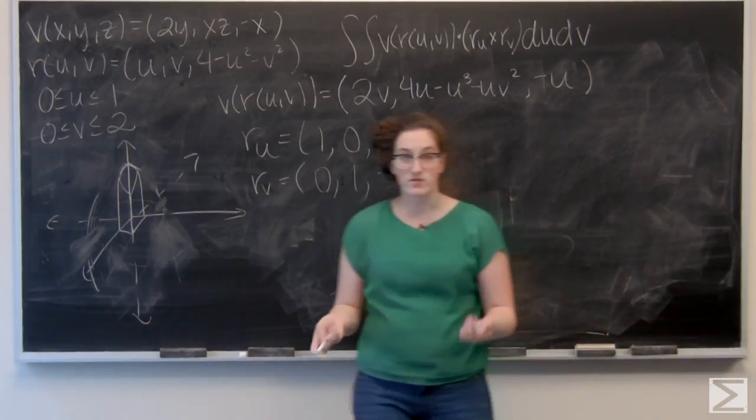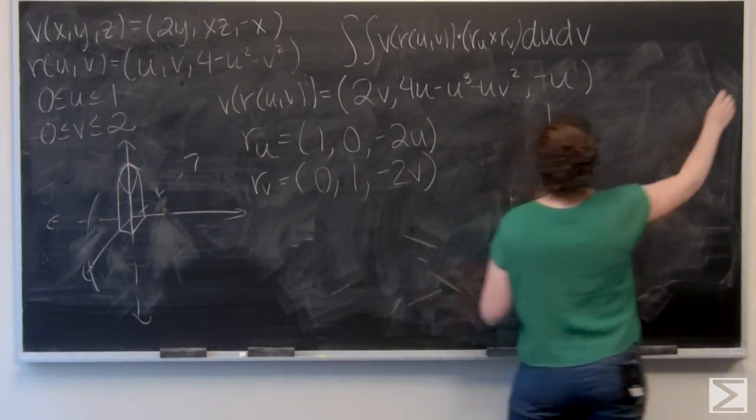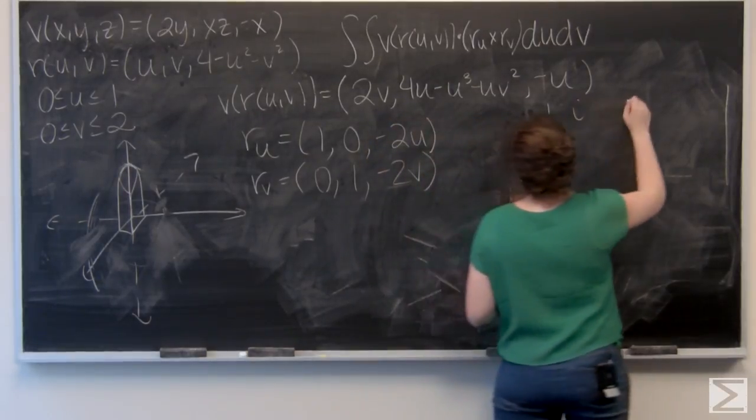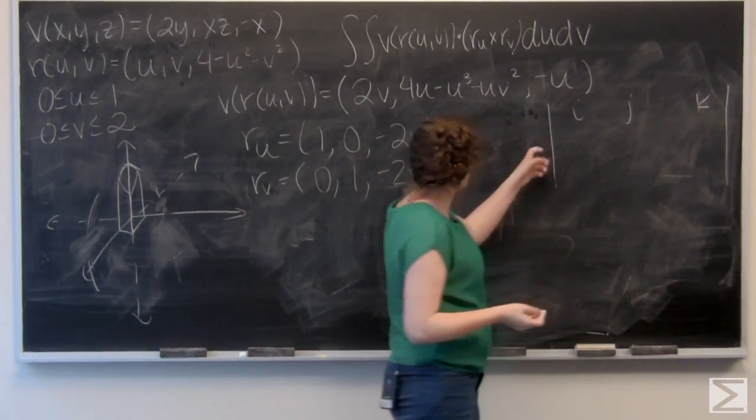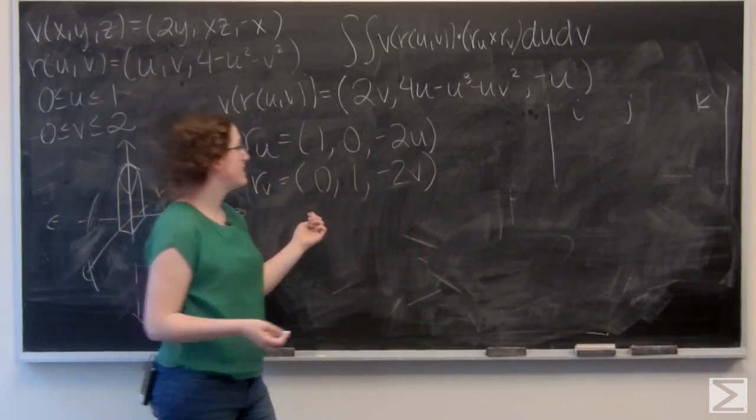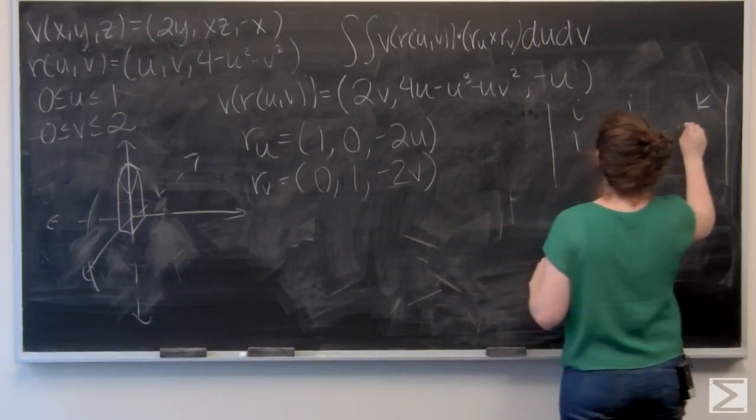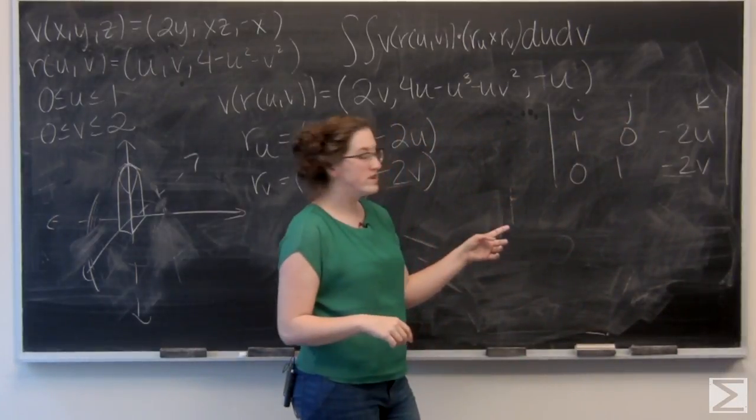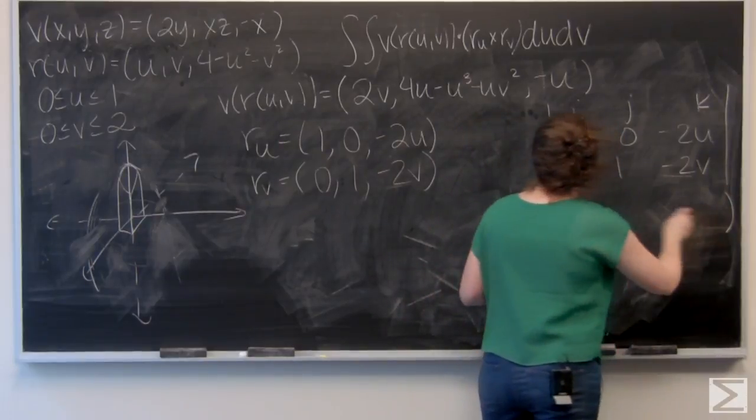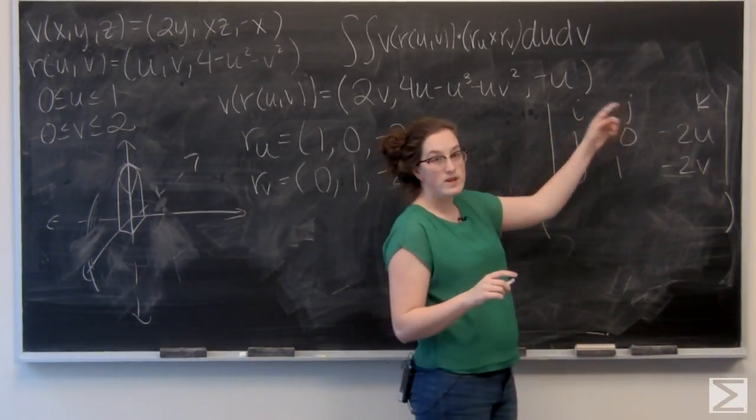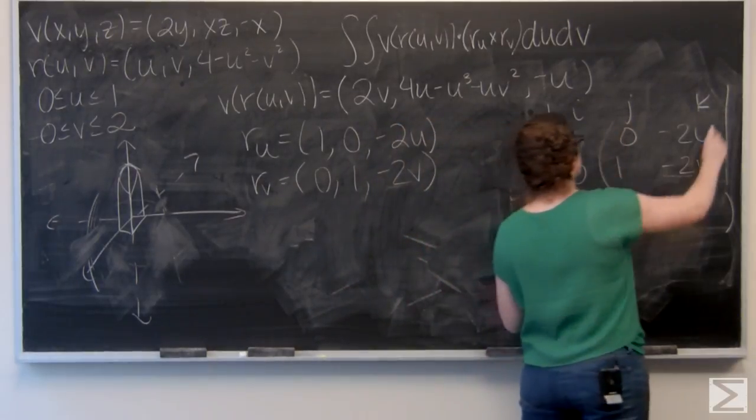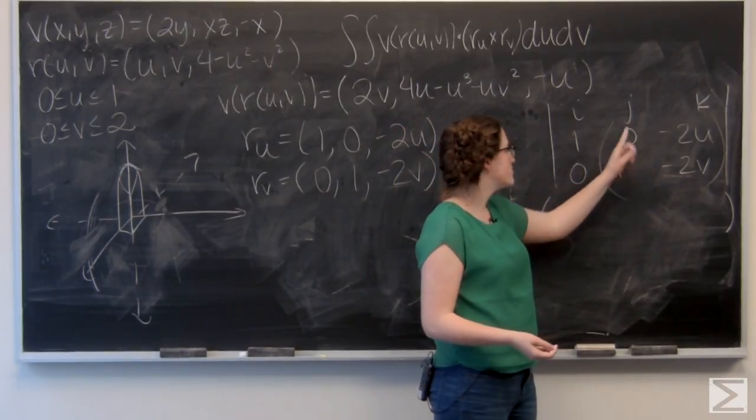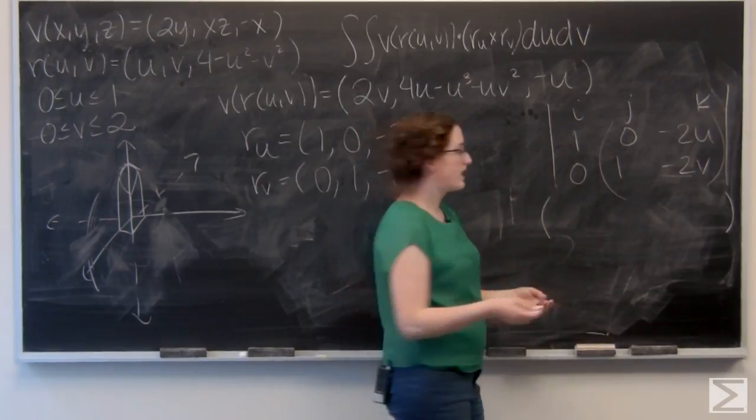And now to find our cross product, I'm going to use a 3 by 3 matrix and cofactor expansion. So, the first row of the matrix is going to be the vector components i, j, and k. So, the second row is going to be r sub u, and the third row is going to be r sub v. To find the i component of this vector, that's our cross product, I'm going to cut the top row and cut the column that i is in. And I have a 2 by 2 matrix here that I want to find its determinant of. So, let's multiply along the main diagonal, it gets 0. And then subtract negative 2u. So, I've got 2u for my i component.